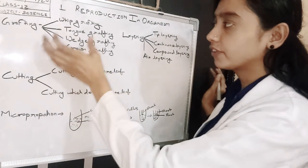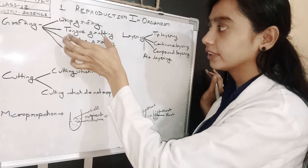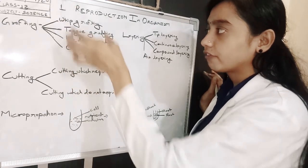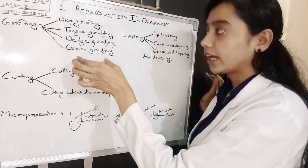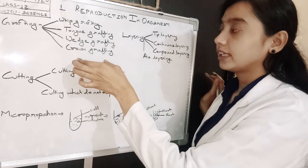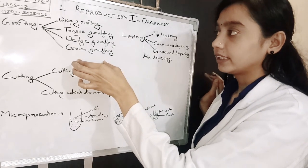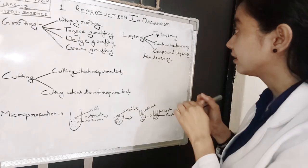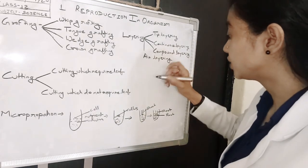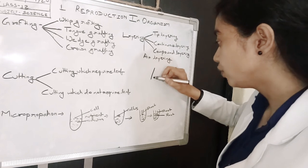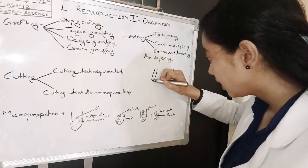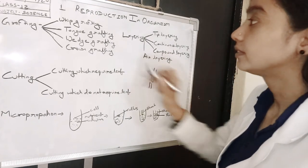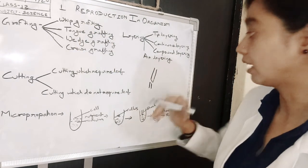Grafting may be of different kinds: whip grafting, tongue grafting, wedge grafting, and crown grafting. What are the differences between these types? The only difference is the manner in which you are cutting the shoot. If you are cutting the shoot in this manner, it is called whip grafting.